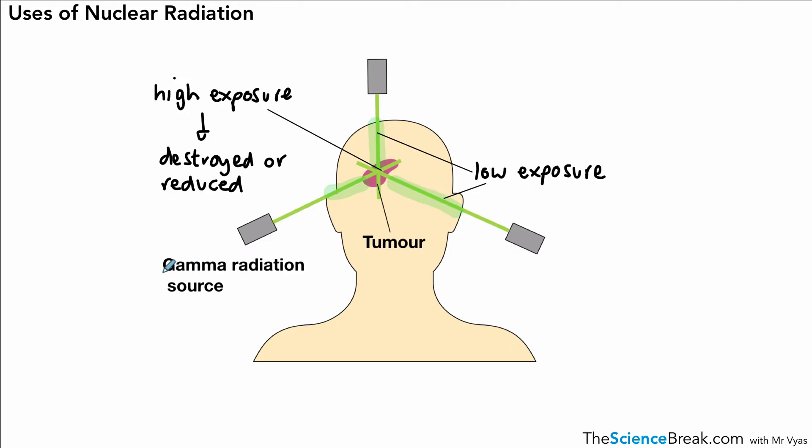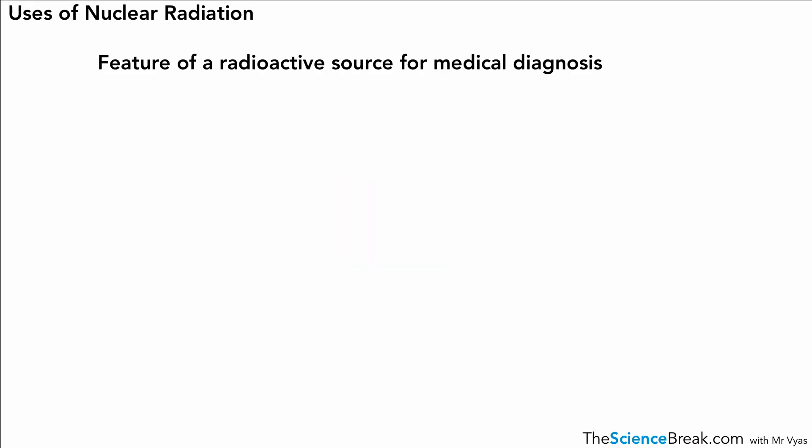This is the second use of nuclear radiation. We use gamma radiation because it needs to penetrate past the skull into the brain tissue and into the tumor. Alpha and beta would not only be dangerous but would not be able to penetrate the skull.